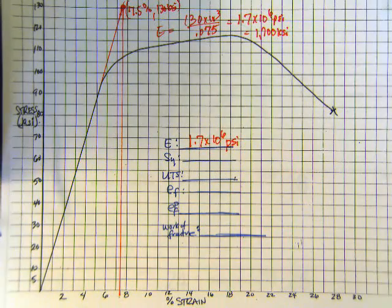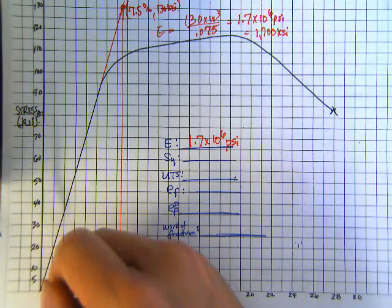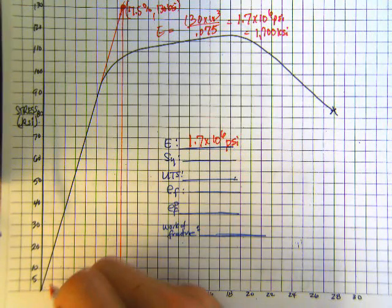Alright. Yield strength. Remember, yield strength is arbitrarily specified to have occurred. Yield is specified to have occurred when we have about 0.2% strain, a permanent strain. So 0.5, I'm sorry, 1.